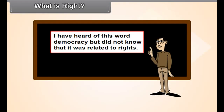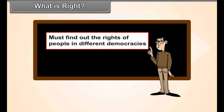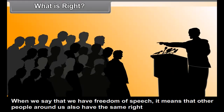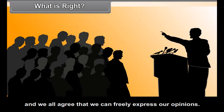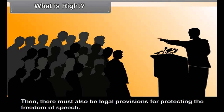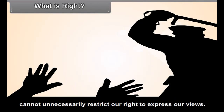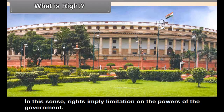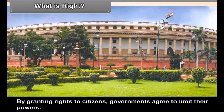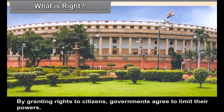I had heard of this word democracy, but did not know that it was related to rights. Must find out the rights of people in different democracies. When we say that we have freedom of speech, it means that other people around us also have the same right and we all agree that we can freely express our opinions. Then, there must also be legal provisions for protecting the freedom of speech. There must be provision that police or any other government officers cannot unnecessarily restrict our right to express our views. In this sense, rights imply limitations on the powers of the government. By granting rights to citizens, governments agree to limit their powers.